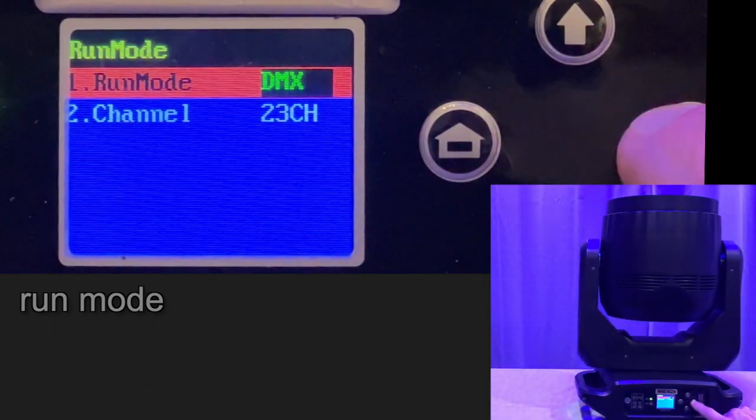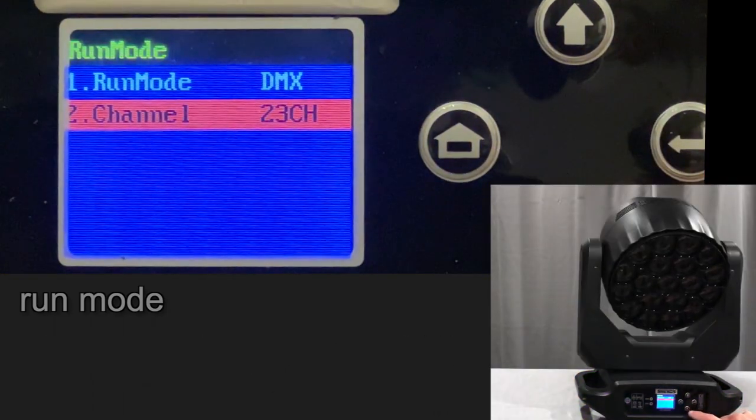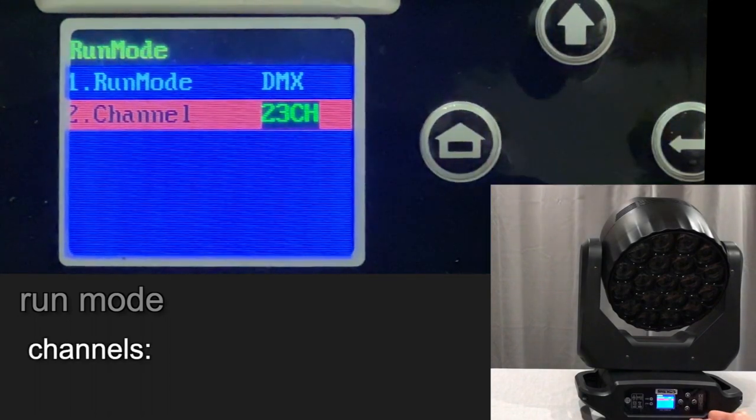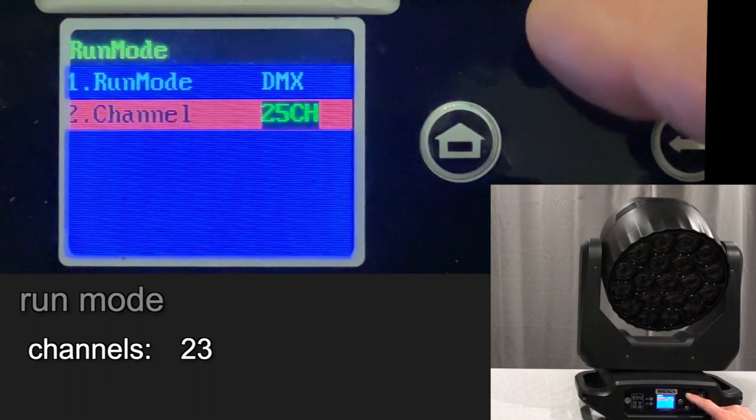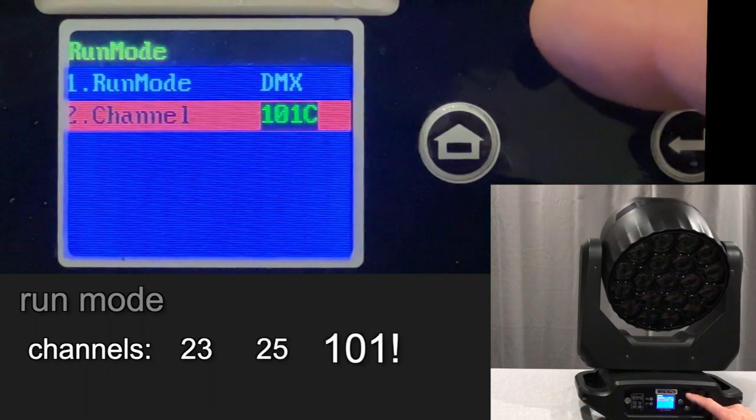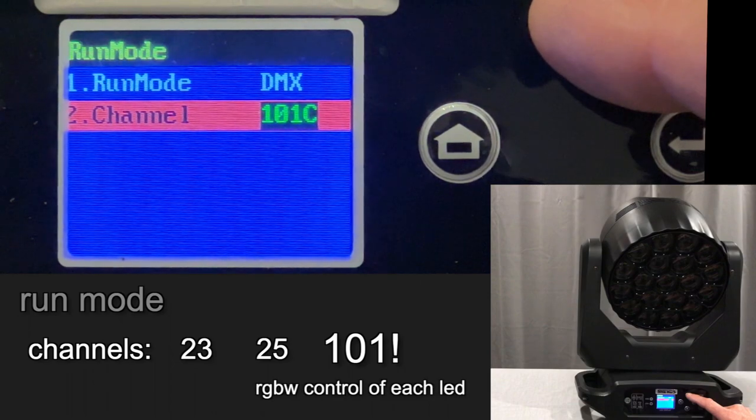Let's put it back in DMX mode. In this setting you can change the number of DMX channels. There's a 23 channel mode, a 25 channel mode, and yes you're seeing this correctly, 101 channel mode.